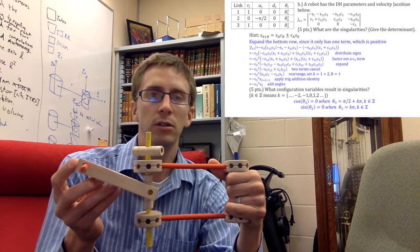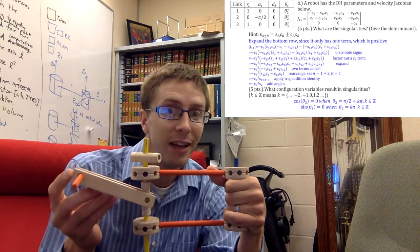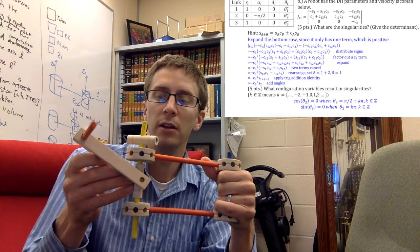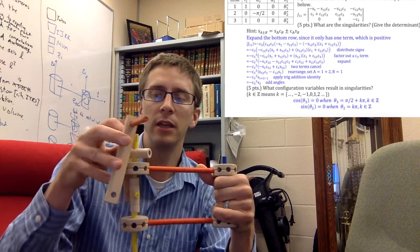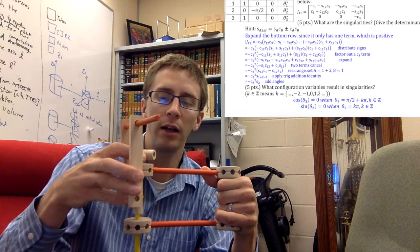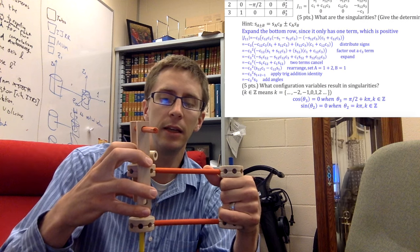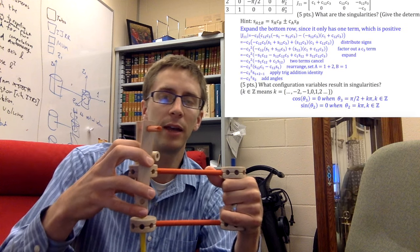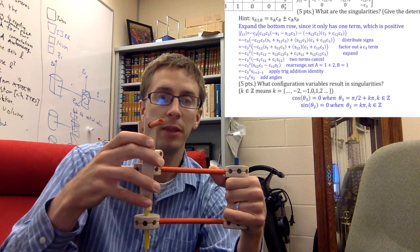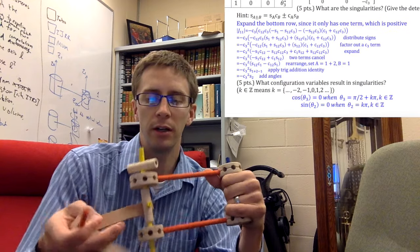Now we had two singularities which could be caused by the second joint or the third joint. The third joint singularities, you can see it happened when the cosine of theta 3 is equal to 0. And that happens when this joint is pointed up in the air, when it's pointed straight down.